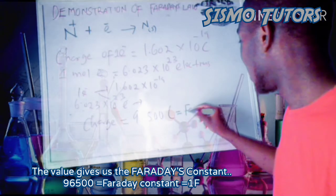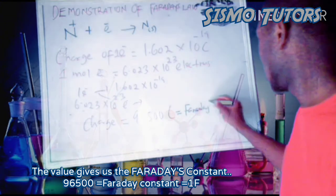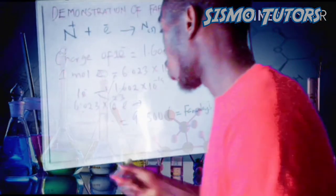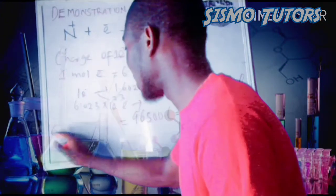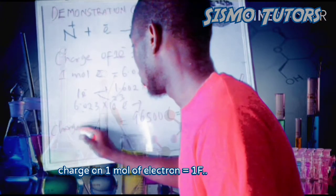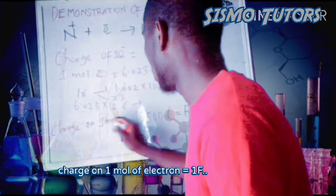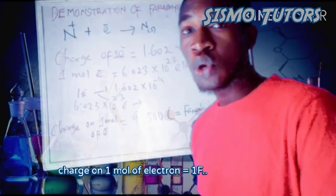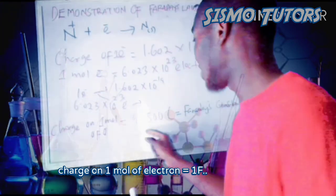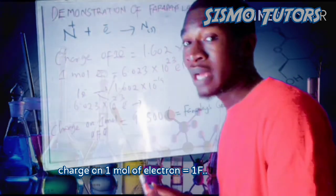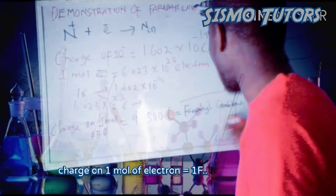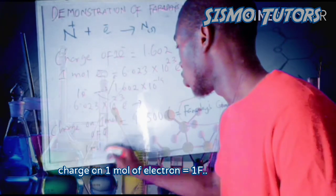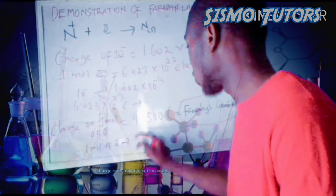This is equal to Faraday's constant — the charge on one mole of electrons. So one mole of electrons contains a total charge of 96500 coulombs, and we refer to this as Faraday's constant, denoted F.